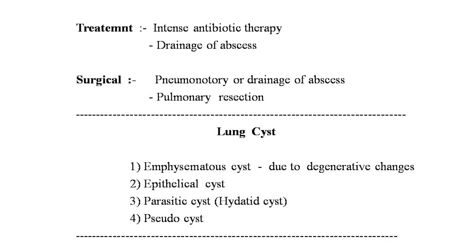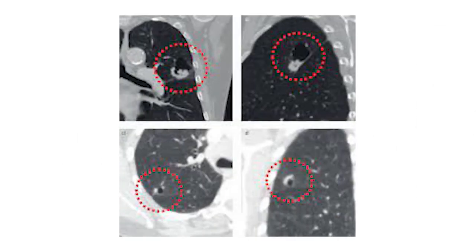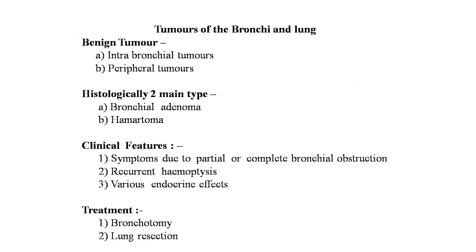Lung cysts: rarely, various types of cysts may be found in the lungs — emphysematous cyst, epithelial cyst, parasitic cyst, and pseudocyst. Emphysematous cysts develop due to degenerative changes in the lungs with destruction of the normal alveolar framework and rupture of alveolar walls. Epithelial cysts are congenital in origin and often associated with other congenital abnormalities. Parasitic cyst — the hydatid cyst — is by far the most common in this group. Pseudocysts are not true cysts; various inflammatory conditions of the lung lead to cavity formation that behaves like a cyst. Here is a CT image clearly showing a lung cyst.